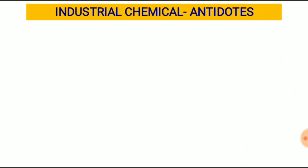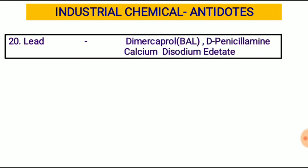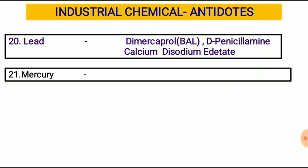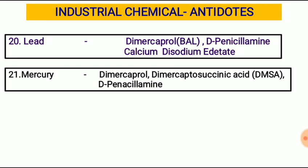Now, a few industrial chemical antidotes. Lead: the antidote is dimercaprol, D-penicillamine, and calcium disodium edetate. Mercury: the antidote is the same as for lead — dimercaprol, dimercaptosuccinic acid (DMSA), and D-penicillamine.